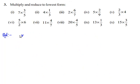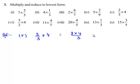Now let us move on to the next bit: 2 by 3 multiplied by 4. Let us multiply the numerators and the denominators respectively. So we have 2 times 4 divided by 3, which is equal to 8 by 3. Since 8 and 3 do not have a common factor, the lowest form of the fraction is 8 by 3 itself.